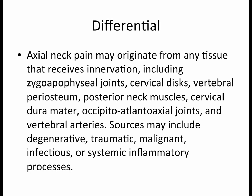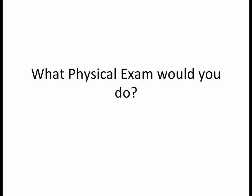One way of looking at the differential is knowing the innervation. Axial neck pain can originate from any tissue that receives innervation, including zygapophyseal joints, cervical discs, periosteum, neck muscles, dura mater, OA joints, and vertebral arteries — as well as degenerative, traumatic, malignant, infectious, or systemic inflammatory processes. Knowing your anatomy and innervations can help guide your differential.